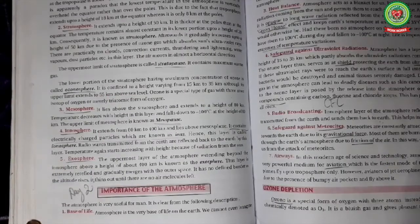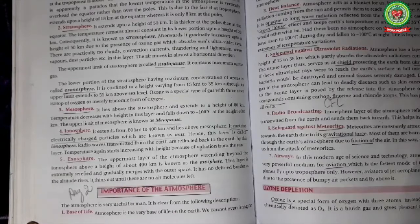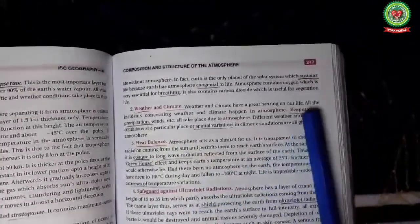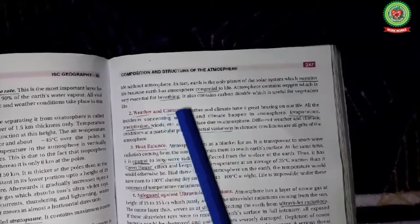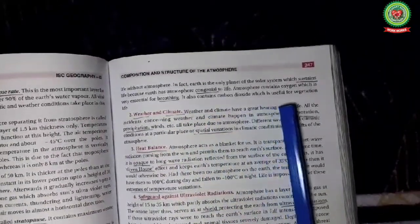Now please open your book at page 246. We will study about the importance of atmosphere. The first point given in the book is that atmosphere is the base of life. It contains oxygen which is very essential for breathing. It also contains carbon dioxide which is useful for plants.